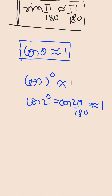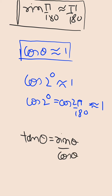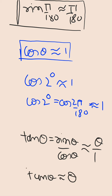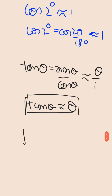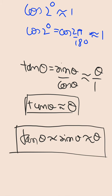Now you should be able to work out the approximation for tan theta, because we know that tan theta equals sin theta divided by cos theta. For small values, sin theta ≈ theta and cos theta ≈ 1. Therefore tan theta ≈ theta divided by 1, which gives us tan theta ≈ theta. So for small values of theta: tan theta ≈ sin theta ≈ theta.